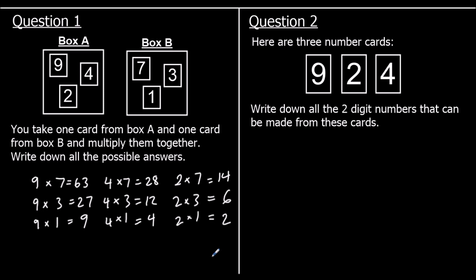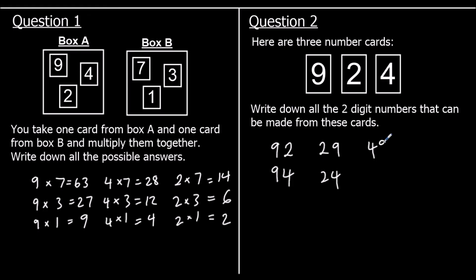The second question gave us three number cards and we need to write down all the two-digit numbers we can make from these cards. If we had nine in the tens, we could have ninety two or ninety four. If we had two in the tens, that'd be twenty nine or twenty four. And if we had four in the tens, we could have forty nine or forty two. And those are all the options.